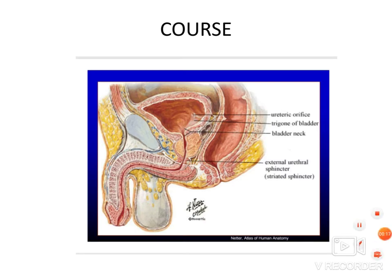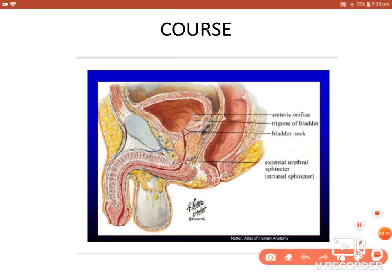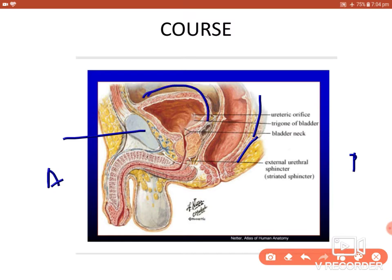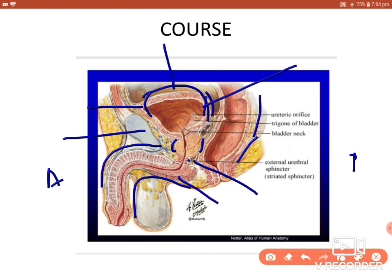Here you are seeing the sagittal view of the male pelvis. You can see the anterior aspect, the pubic symphysis anteriorly, and the sacrum posteriorly. You can identify the urinary bladder — its apex, superior surface, and base — along with the prostate and the urogenital diaphragm.